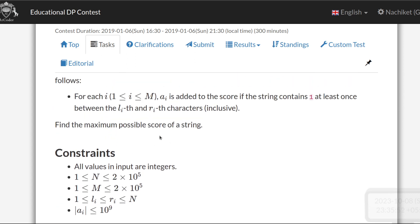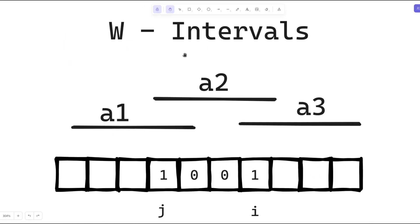Let's understand the problem better. Suppose we have constructed a string of zeros and ones where only positions i and j are 1, as shown in this diagram. There are three segments with corresponding range endpoints and scores A1, A2, and A3. The total score will be A1 plus A2 plus A3: segment 1 has a 1 in its range so A1 is added, segment 2's condition is satisfied (at least once) so A2 is added, and A3 is added because index i lies in that range.